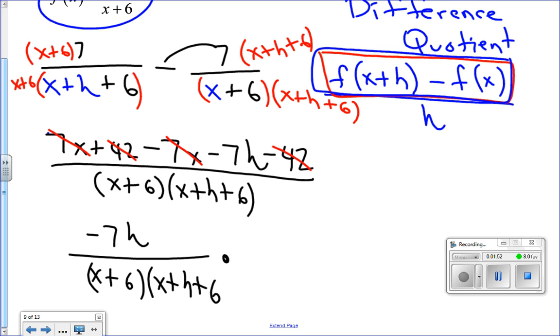Let's multiply that by the reciprocal of h. Notice here we still have to divide by h. Dividing by h is the same thing as multiplying by 1 over h, and by doing that I avoid a complex fraction. I can also see that the h's cancel, and my answer will be negative 7 over the denominator of x plus 6 times x plus h plus 6.